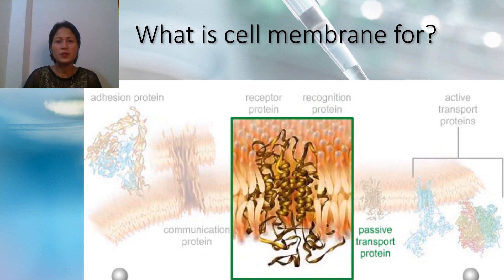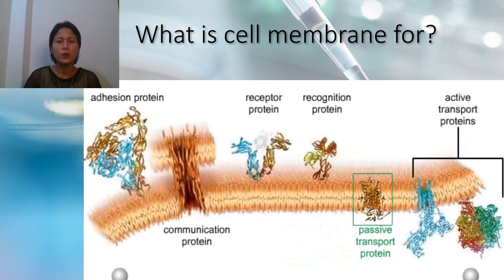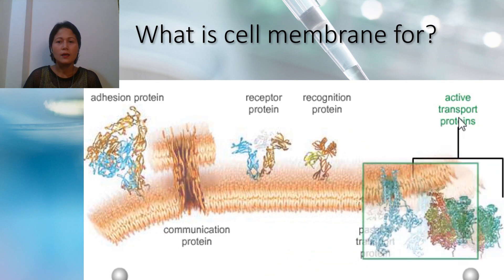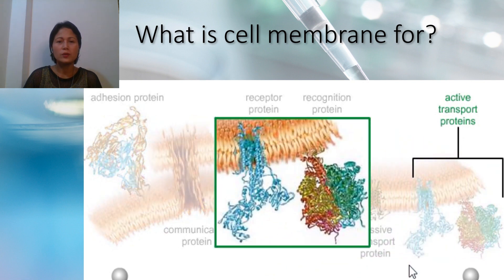Passive transport proteins are channels that passively enable one or more substances to cross the membrane. Some are always open, while others have molecular gates that open and close in more controlled ways. Active transport proteins are called ATPase pumps — energy provided by ATP makes them actively pump solutes across the membrane. The blue ribbon model here is for calcium transport across the membrane, and the multicolored ribbon model is of an ATP synthase, which pumps hydrogen ions that leads to ATP synthesis.